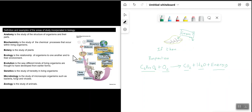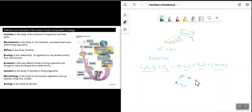Botany is the study of plants. Ecology is the relationship of organisms to one another and to their environment — generally looking at populations, communities, and ecosystems. Evolution is the way different kinds of living organisms are thought to have developed from earlier forms. From an evolutionary point of view, all life started from one single organism, which then evolved into different types of organisms over millions of years, and those organisms evolved further, giving us the diversity of life we see today.